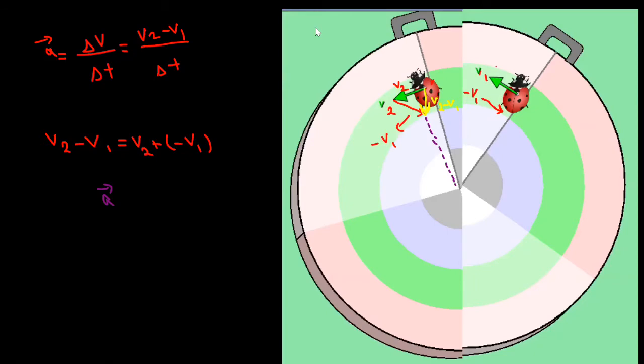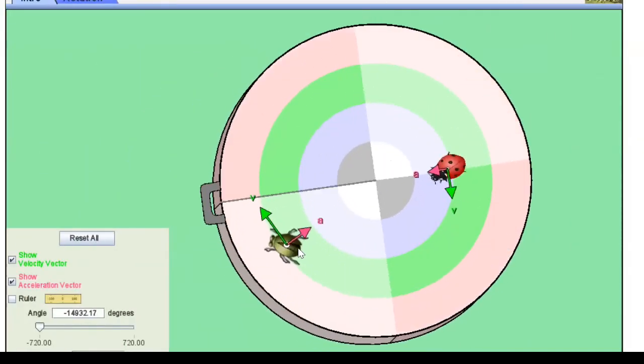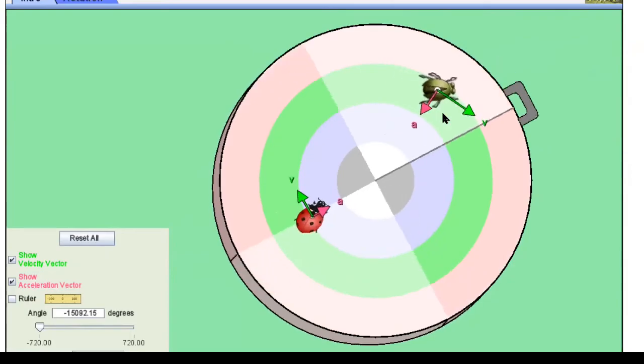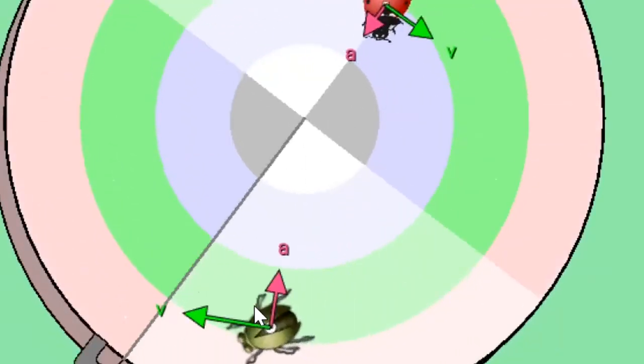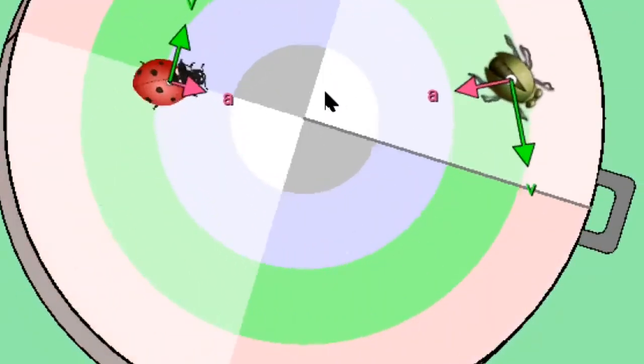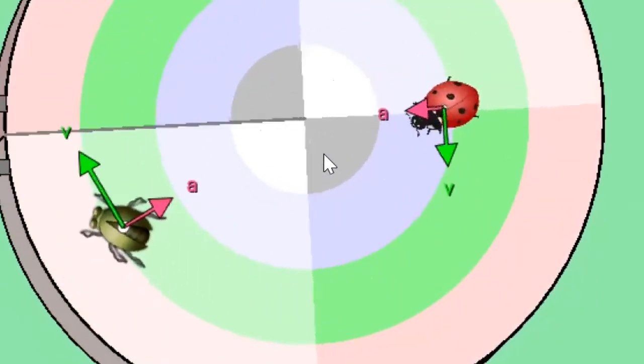Let's look at the simulation and see it. You can see for this one the direction of V keeps changing while the direction of acceleration is always toward the center of the circle.